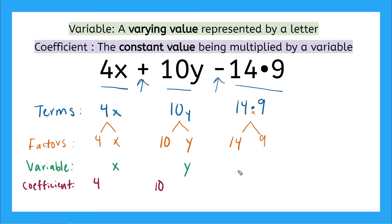Now what about 14 and 9? Are both of these numbers coefficients because they're constant values? Nope, actually there's no coefficients in our third term because neither of these are a variable. So even though they're constant values, since they're not being multiplied by a variable, we do not refer to them as coefficients.